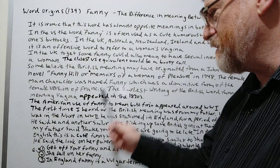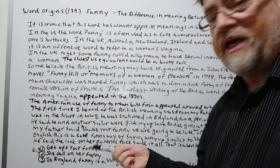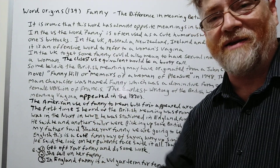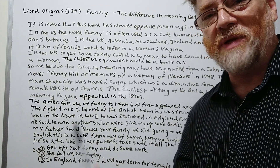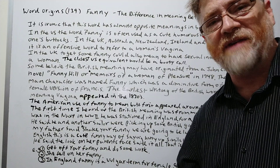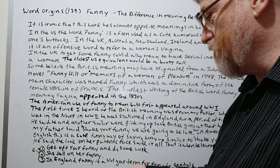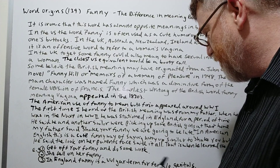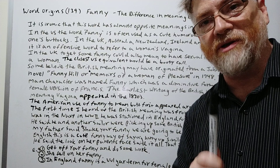Here are three quick examples. First: 'Get off your fanny and do some work' — like saying get off your butt and stop being lazy. Second: 'She fell on her fanny' — a cute way of saying she fell on her butt. And for the British usage: 'In England, fanny is a vulgar term for female genitals.' So be careful how you use it.